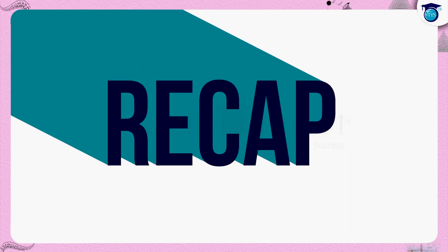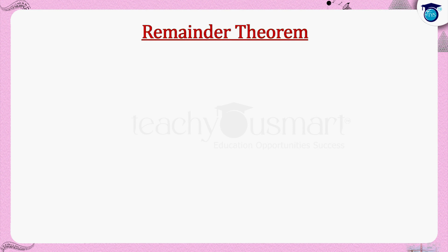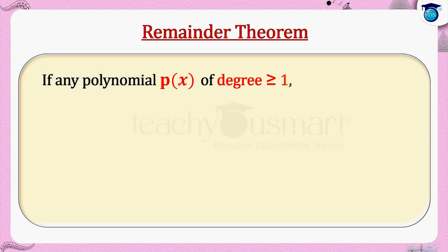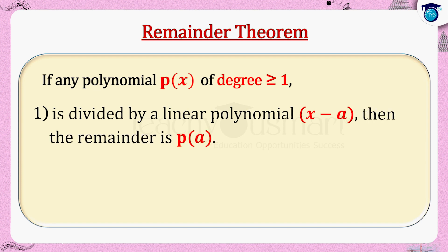Let's recall what we discussed today. We learned the remainder theorem and how to find a remainder when p of x is divided by a linear polynomial. If any polynomial p of x of degree greater than or equal to one is divided by a linear polynomial x minus a, then the remainder is p of a.